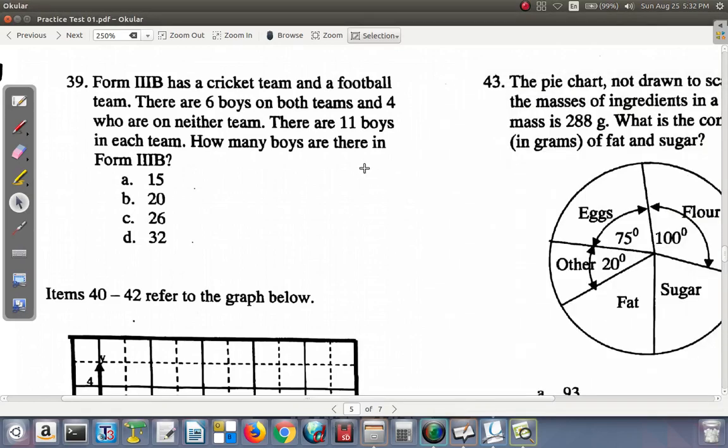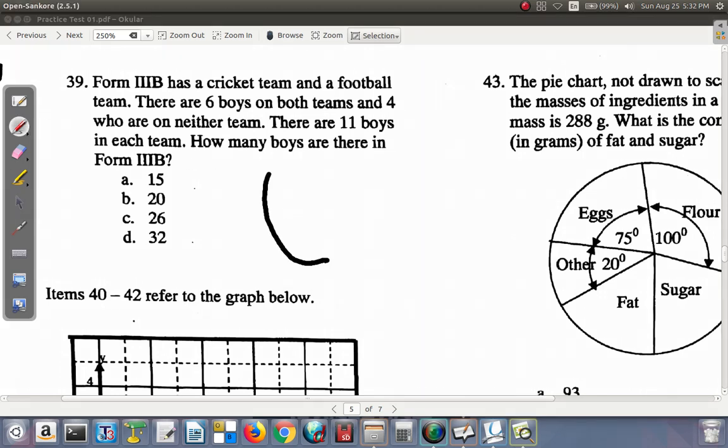Let's look at question 39. Form 3B has a cricket team and a football team. There are six boys on both teams. That's suggesting that you have the two teams overlap. You have an intersection, cricket and football.